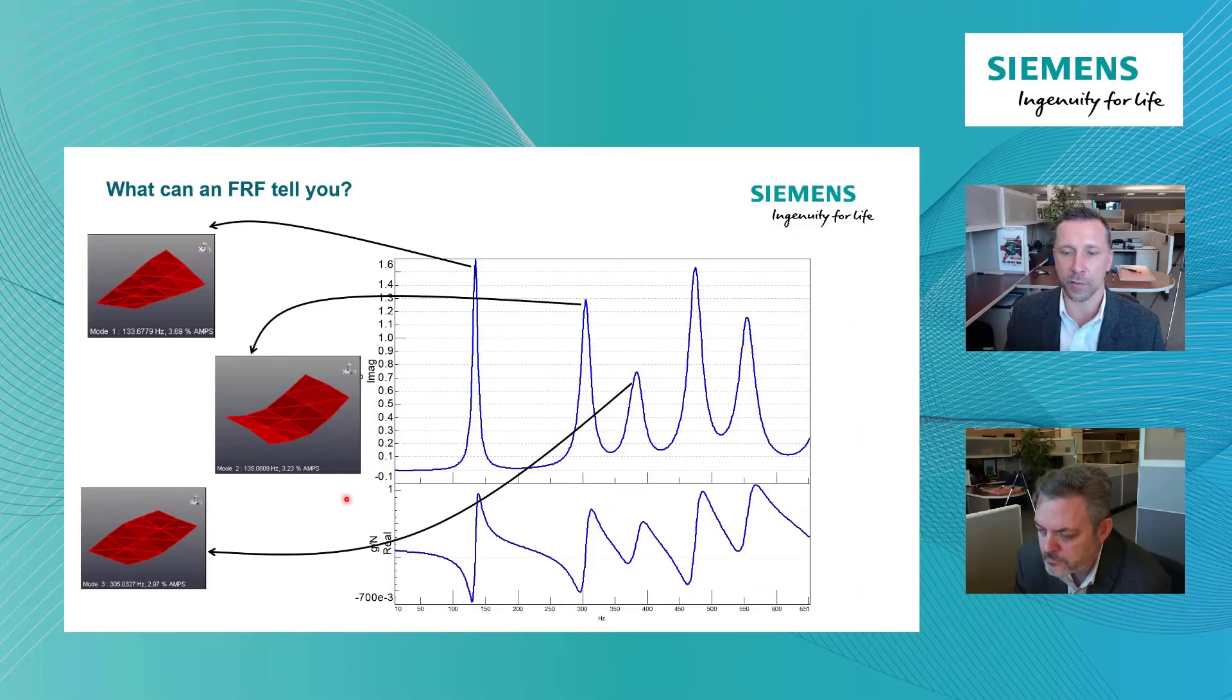So in other words, a structure is going to have more than one resonant frequency, but at each one of those frequencies it's going to have a different mode shape that I can determine using multiple FRFs.